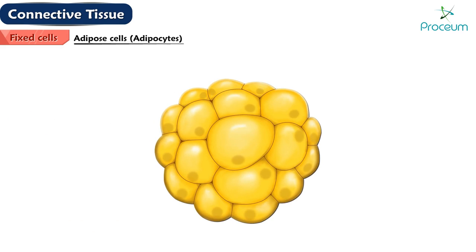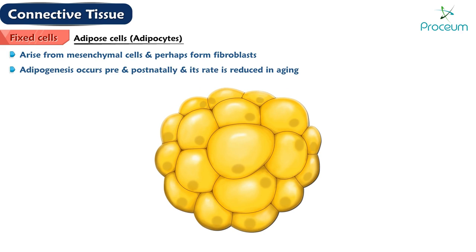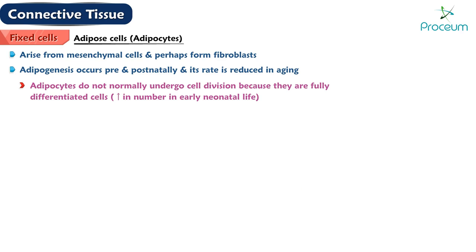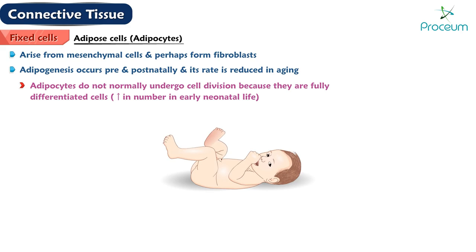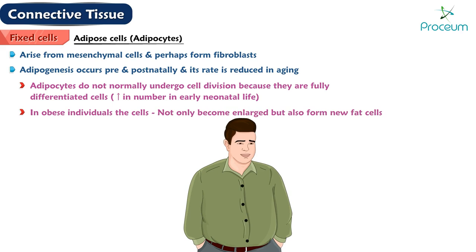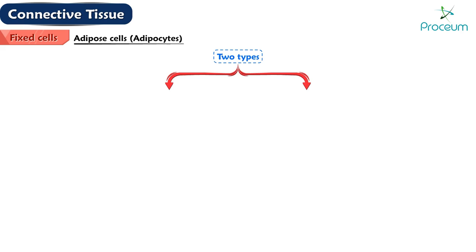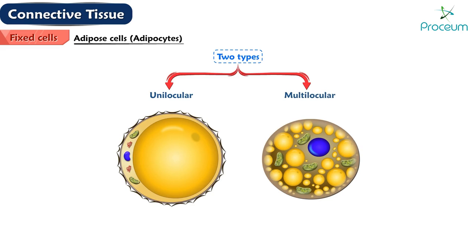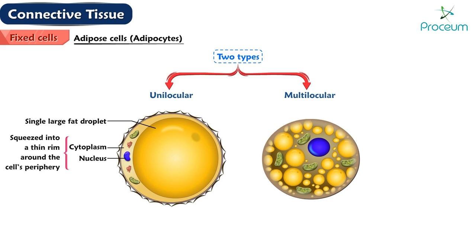Adipose cells, also known as adipocytes, arise from mesenchymal cells and perhaps from fibroblasts. Adipogenesis occurs pre- and postnatally and its rate is reduced in aging. Adipocytes do not normally undergo cell division because they are fully differentiated cells. However, they do increase in number in early neonatal life. Although in obese individuals, the cells not only become enlarged but also form new fat cells. There are two types of fat cells: unilocular and multilocular. Unilocular adipose cells contain a single large fat droplet; the cytoplasm and nucleus are squeezed into a thin rim around the cell's periphery. They are surrounded by a basal lamina and are responsible for the synthesis, storage, and release of fat.